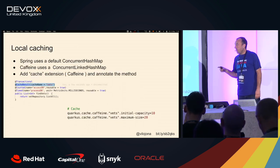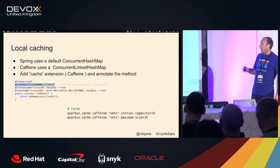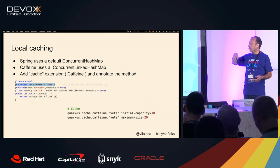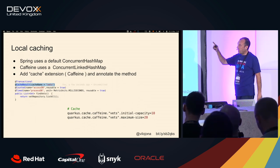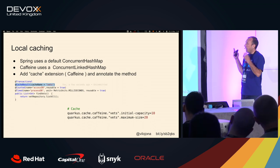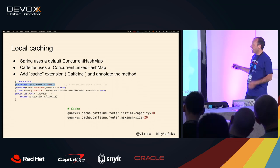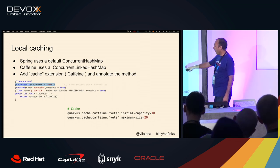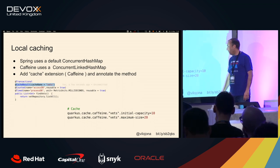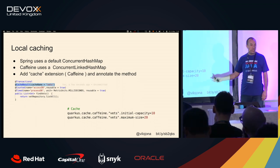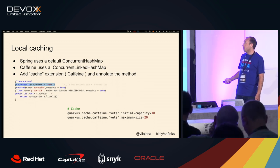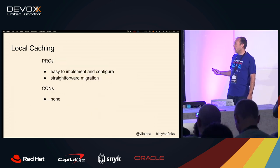With local caching — again, it's more or less the same. It's a matter of a string replace of the @CacheResult annotation, and that's it. In the properties file you can even configure how those caches are behaving. Very, very easy.